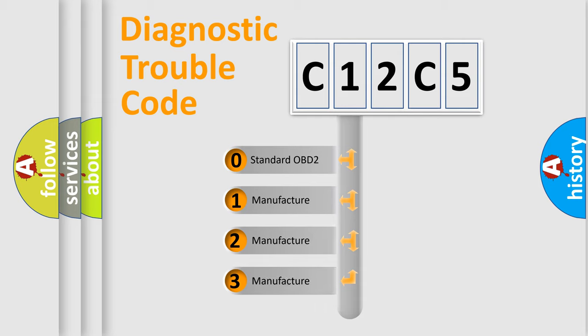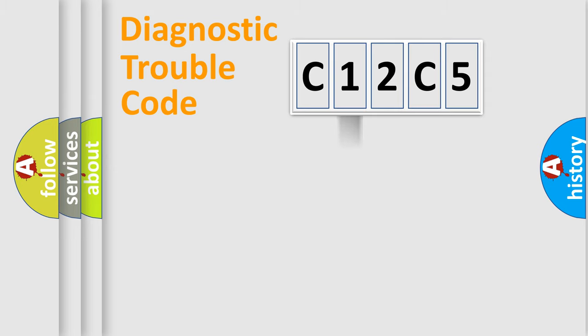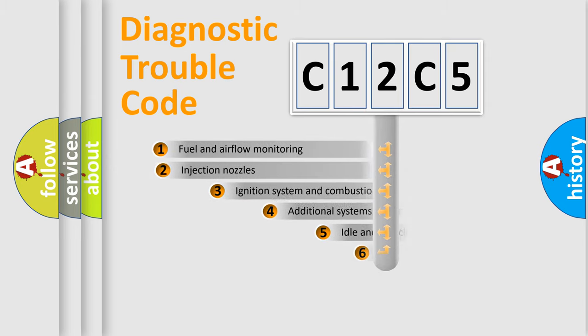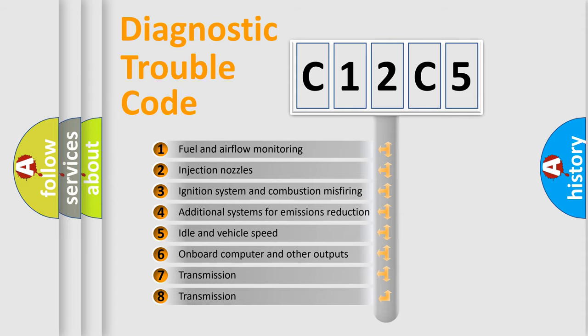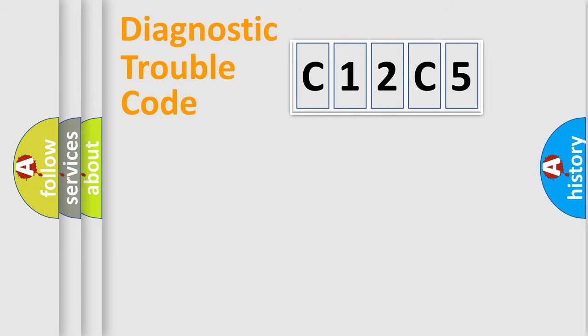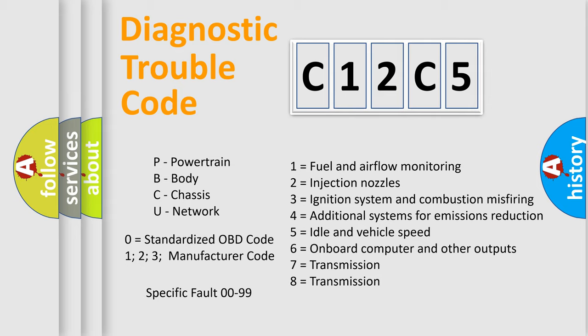If the second character is expressed as zero, it is a standardized error. In the case of numbers 1, 2, 3, it is a more prestigious expression of the car-specific error. The third character specifies a subset of errors. The distribution shown is valid only for the standardized DTC code. Only the last two characters define the specific fault of the group. Let's not forget that such a division is valid only if the other character code is expressed by the number zero.